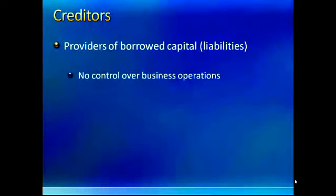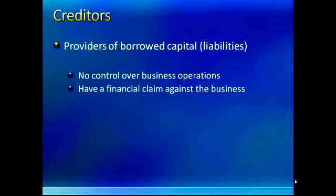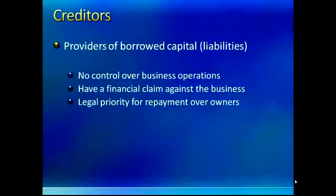Creditors are the providers of borrowed capital — the source of external funds — and that's what creates liabilities. So whenever you see a company with liabilities on their balance sheet, it means they owe somebody money. These creditors have no control over business operations, but they do have a financial claim against the business. In terms of legal priority, in the event of bankruptcy or insolvency, you take the assets and use them to first satisfy the liabilities.